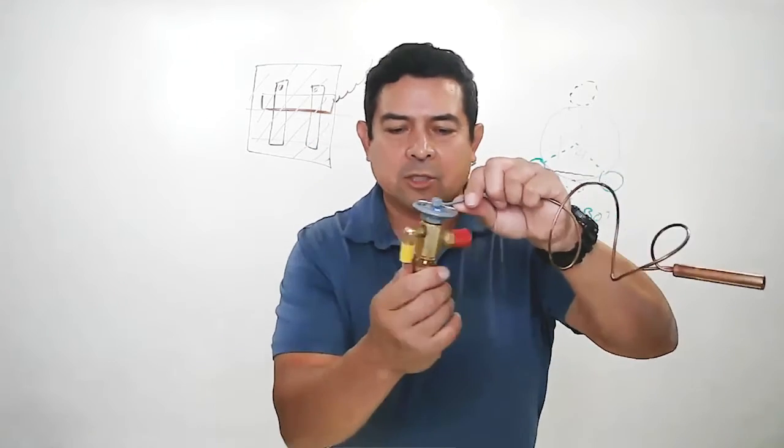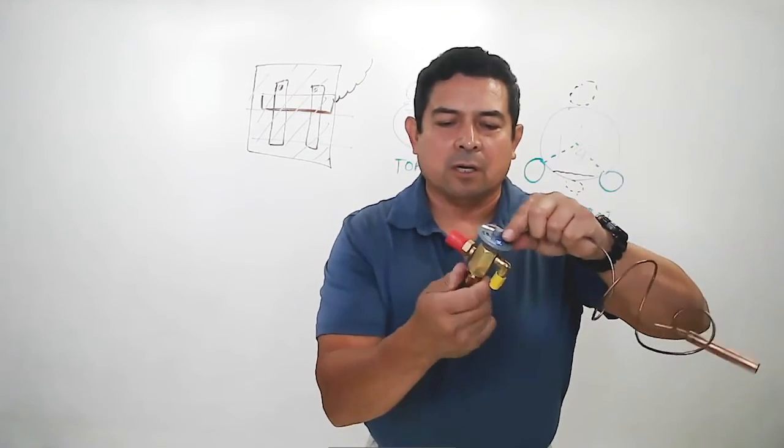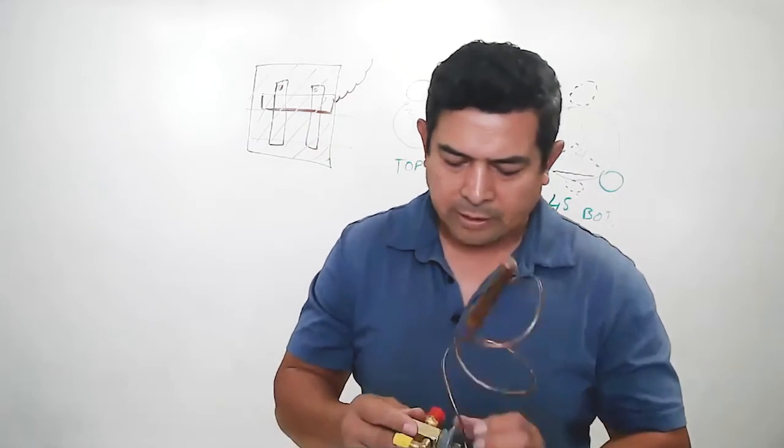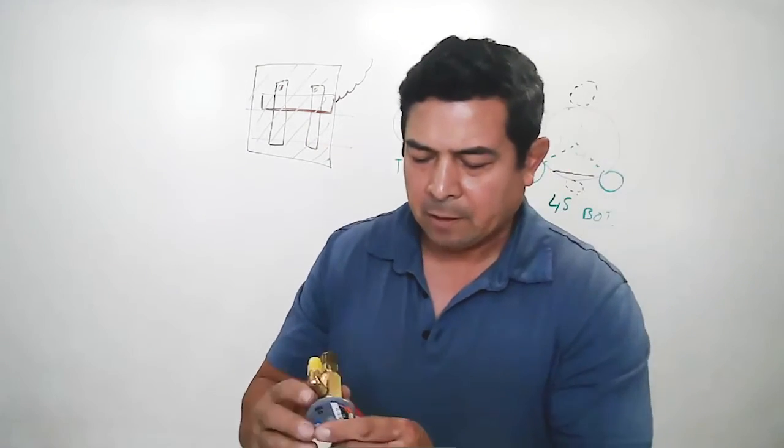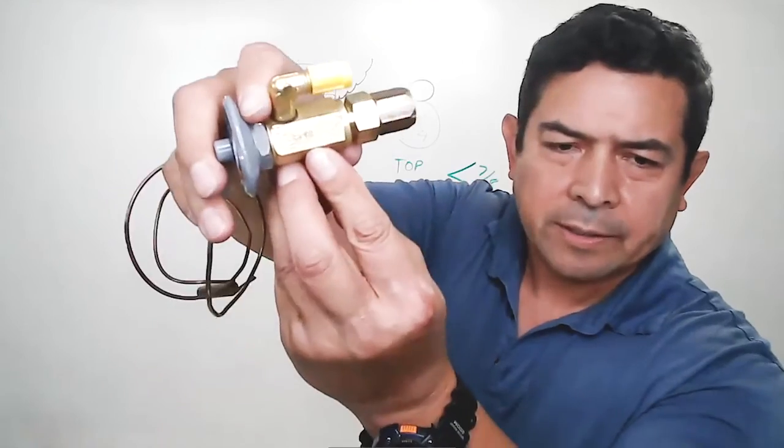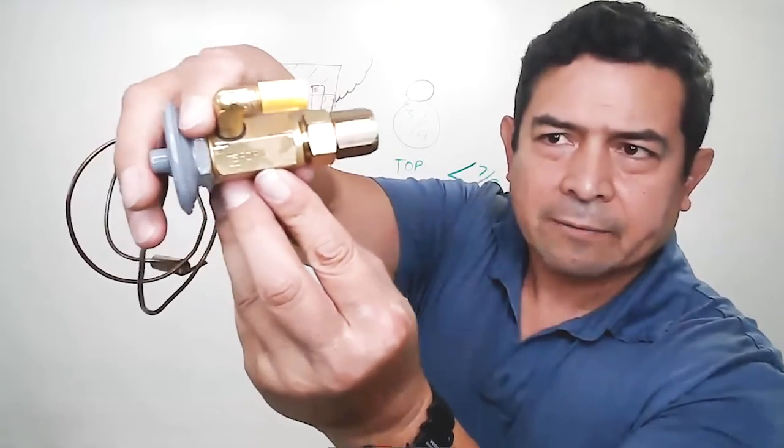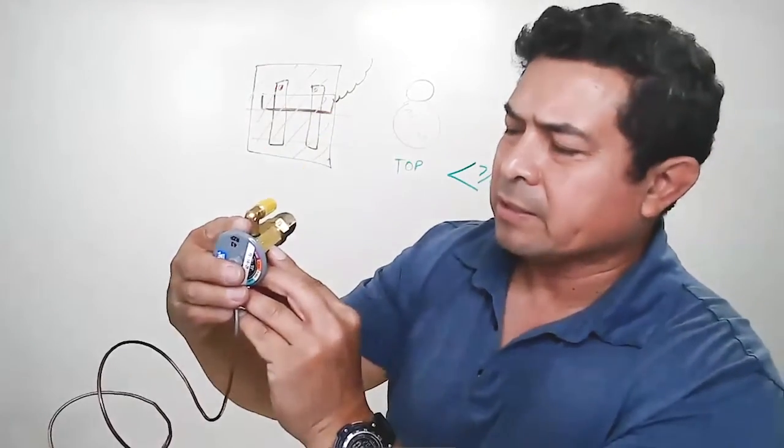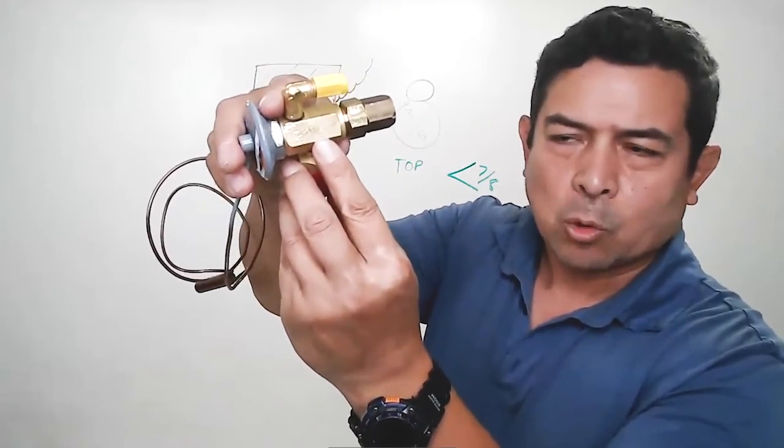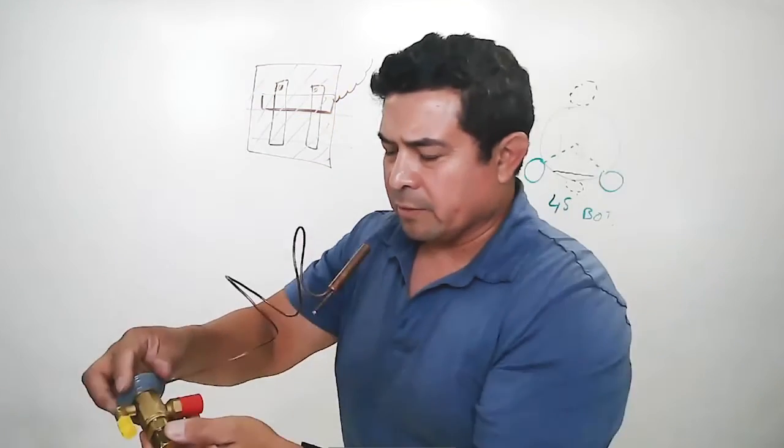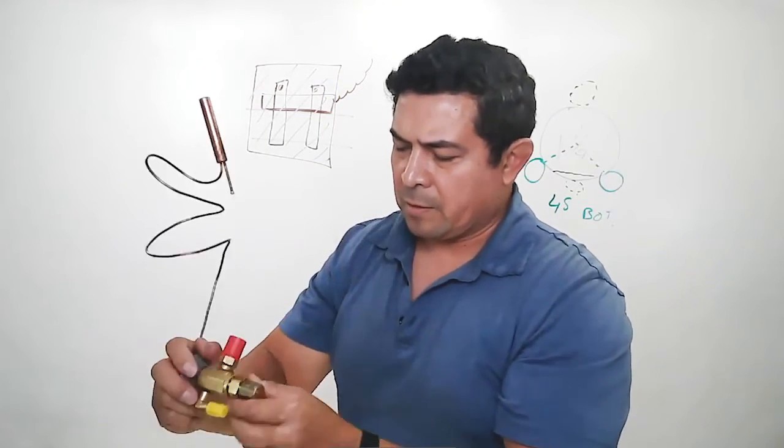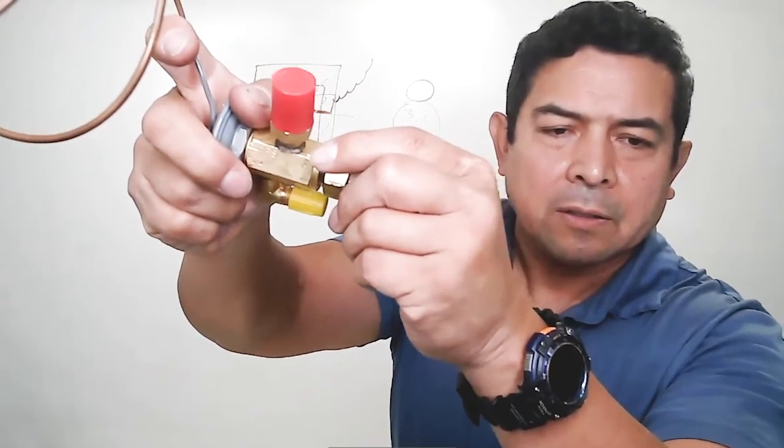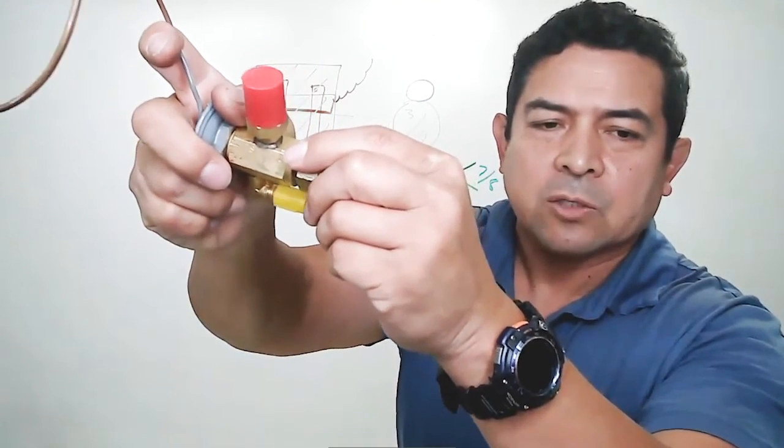Now, this is just a short overview of your TXV. The other thing on TXVs is that when we look at the body, that right there says Sporlin on it. That is the brand name. That's who makes this valve. If we look on the other side right here, right where my finger's pointing, it says one quarter.